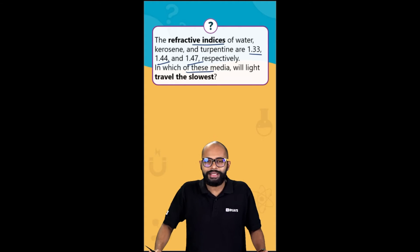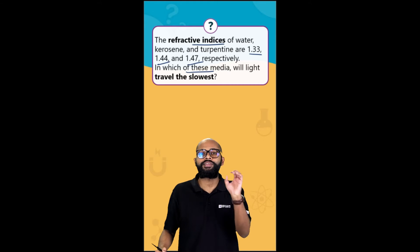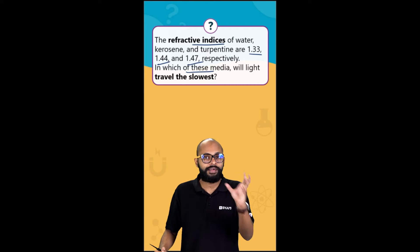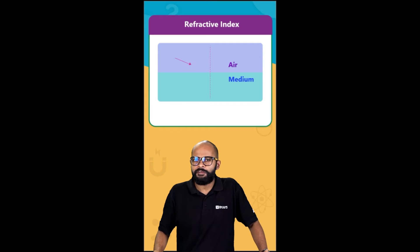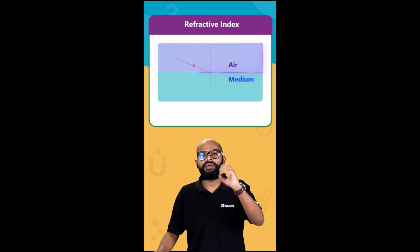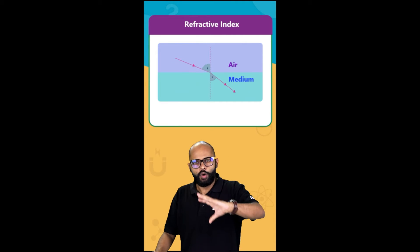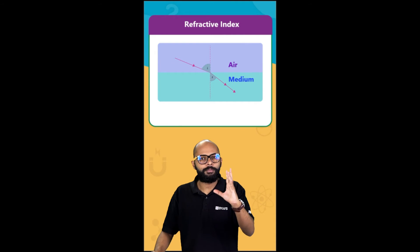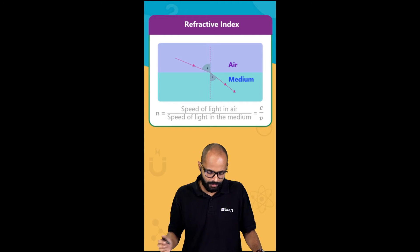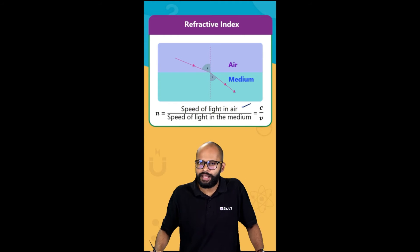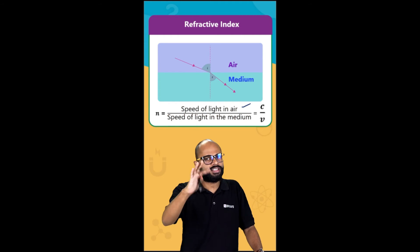In which of these media will light travel the slowest? To answer this question, we should know what is the relation between refractive index and speed of light in that medium. When light travels from an optically rarer to a denser medium, its speed decreases and consequently it bends towards the normal. The refractive index equals the speed of light in air divided by the speed of light in that medium — that is, c upon v.